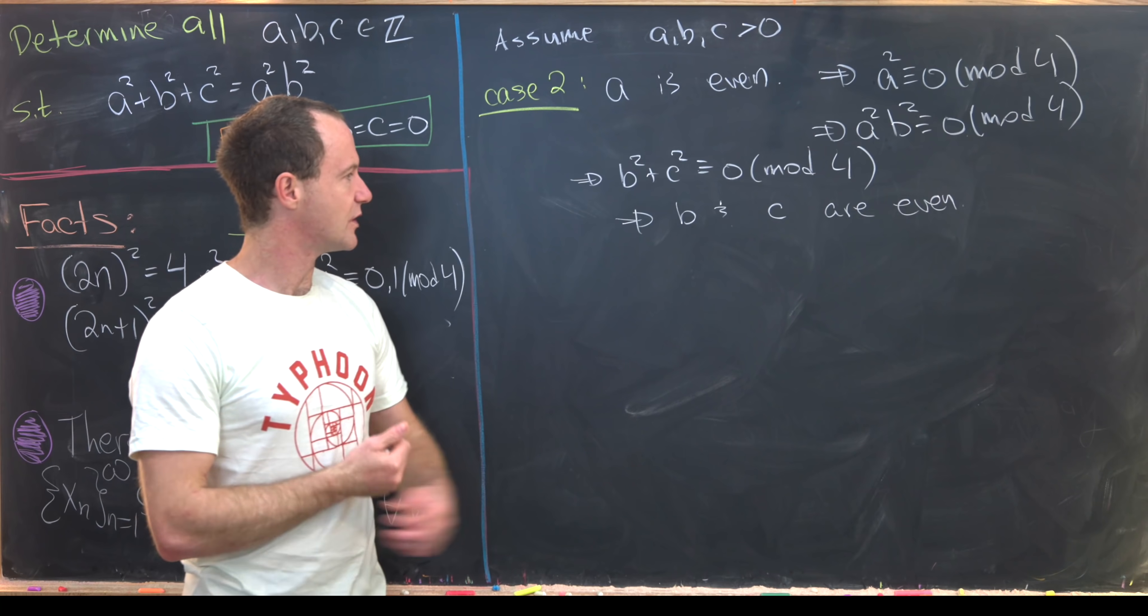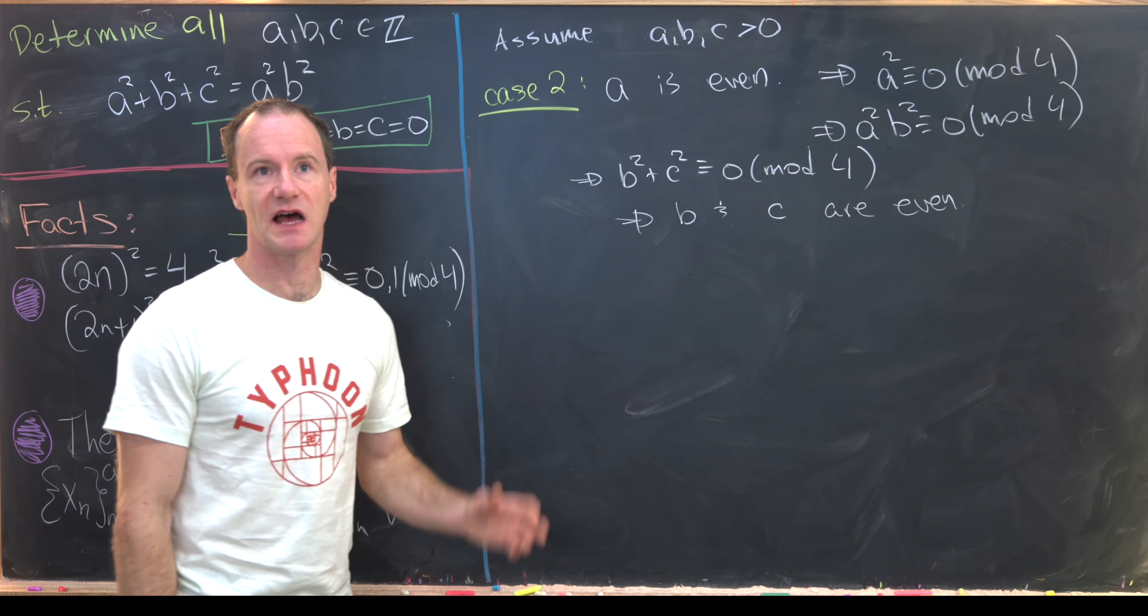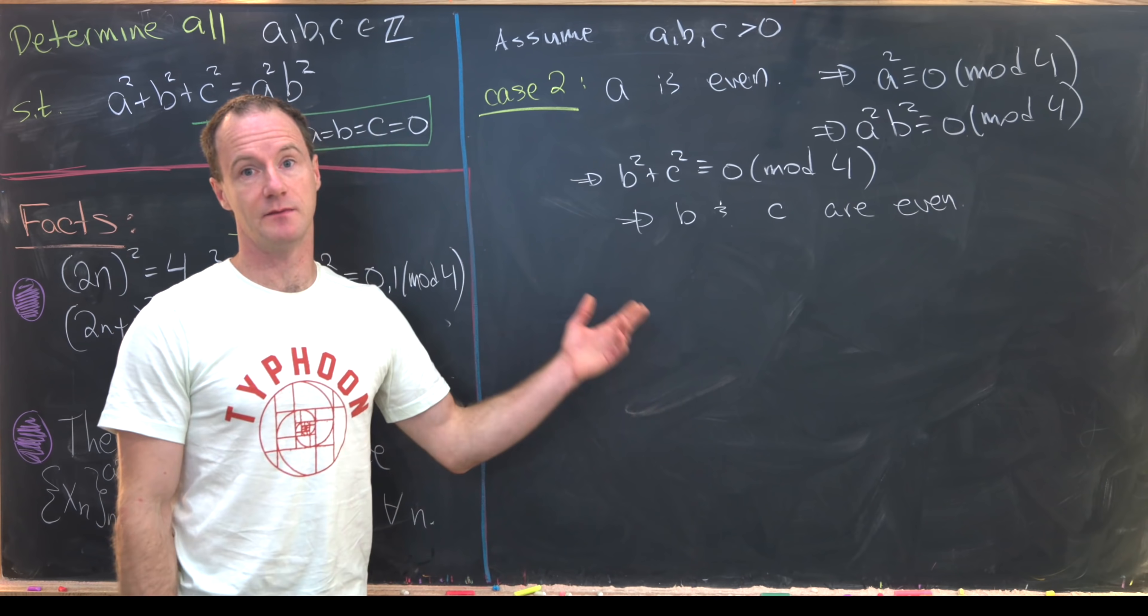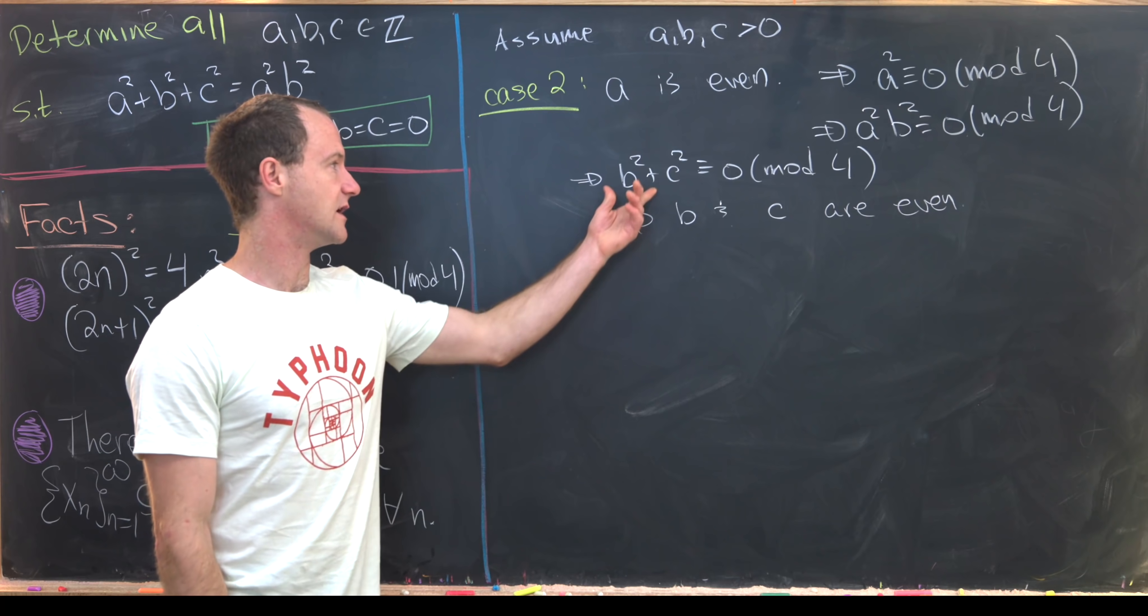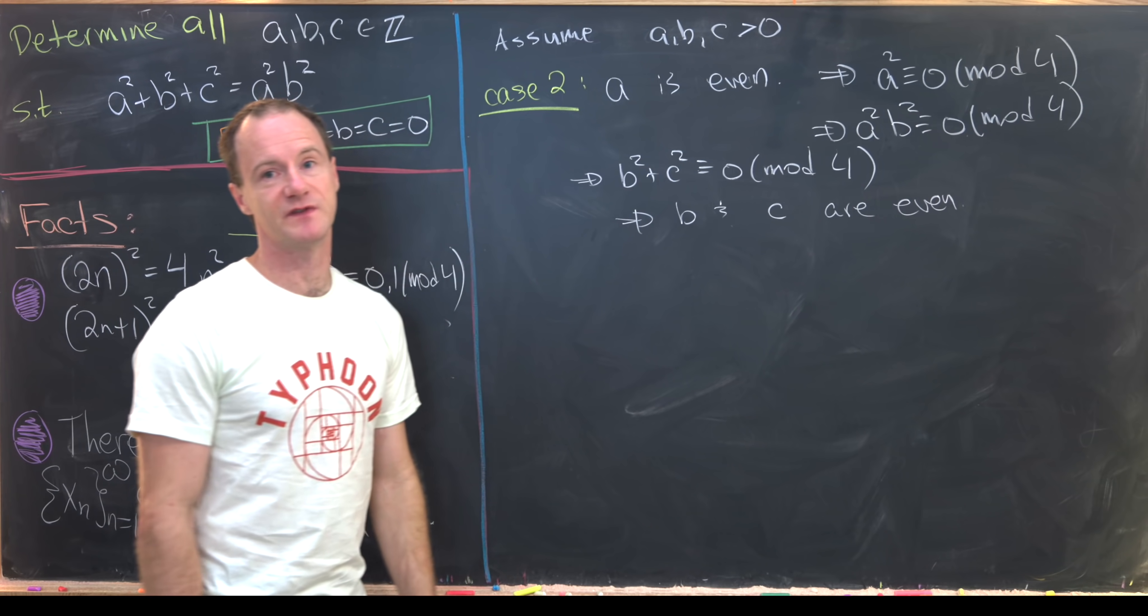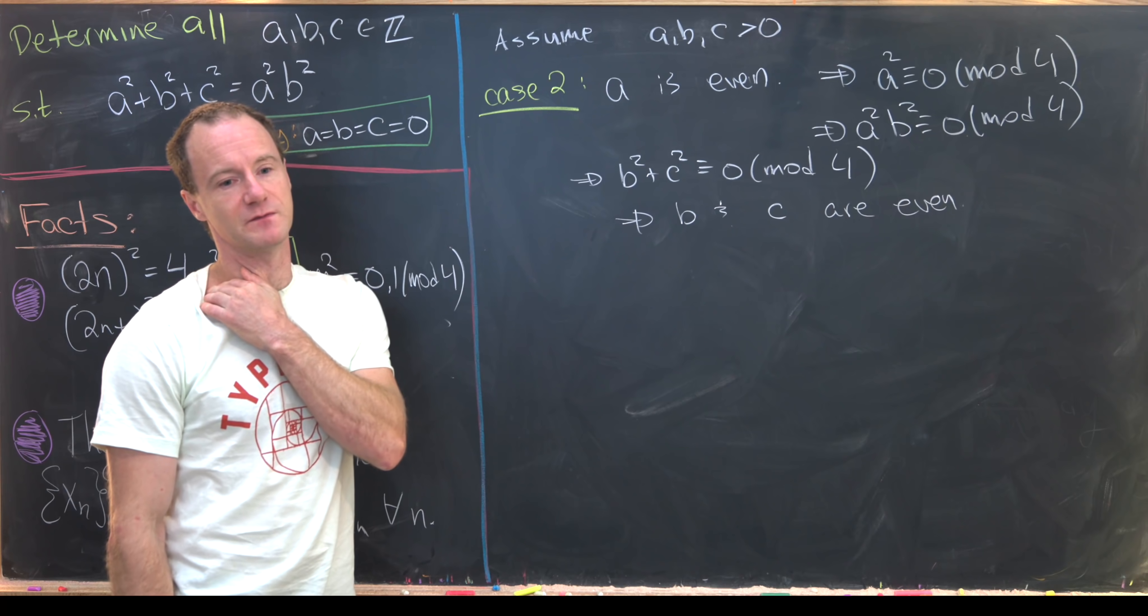But if b² + c² ≡ 0 (mod 4), notice that means that b and c are even. Well, why is that? Well notice if b is odd and c is even, then the left-hand side would be 1 mod 4. If c were odd and b was even, again it's 1 mod 4. And if they're both odd, then it's 2 mod 4. So the only way we can get that the sum of these squares is 0 mod 4 is for both of them to be even.